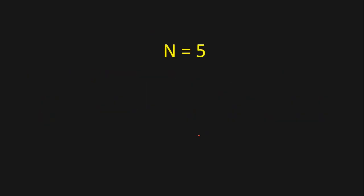If we are given N equals 5, then we have numbers from 1 to 5. For 1 we print 1, for 2 we print 2, for 3 we print 'Fizz' because 3 is a multiple of 3. Then for 4 we print 4, and for 5, since 5 is a multiple of 5, we print 'Buzz'.